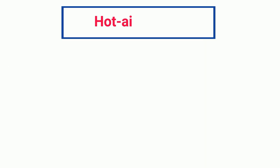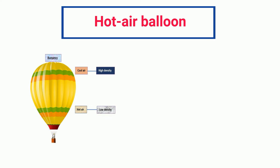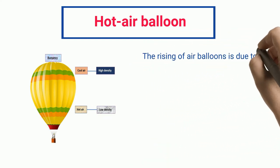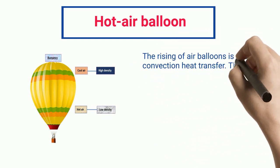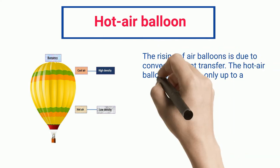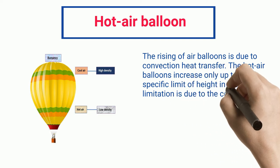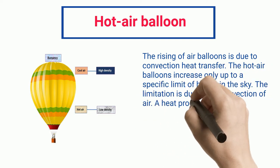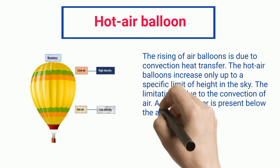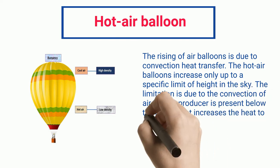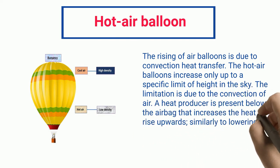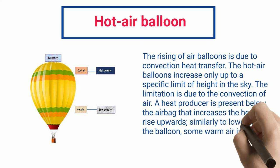Hot Air Balloon: The rising of air balloons is due to convection heat transfer. The hot air balloons increase only up to a specific limit of height in the sky. The limitation is due to the convection of air. A heat producer is present below the airbag that increases the heat to rise upwards. Similarly to lowering the balloon, some warm air is replaced by cold air.